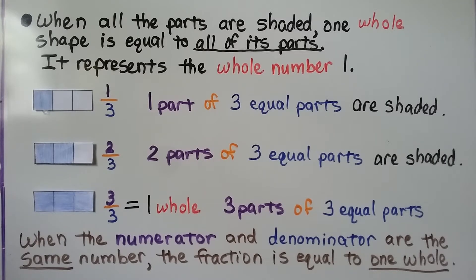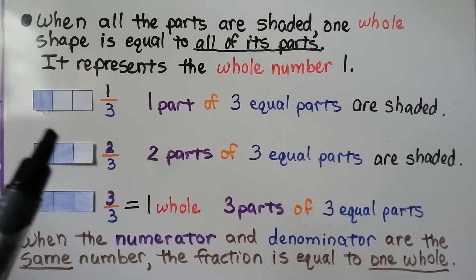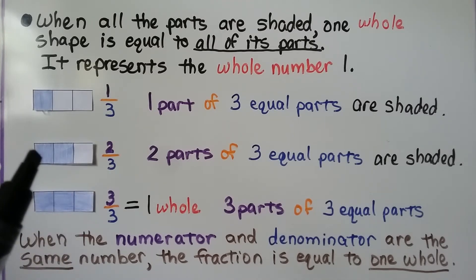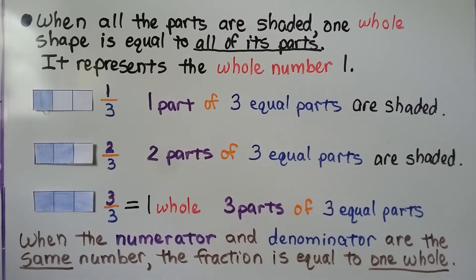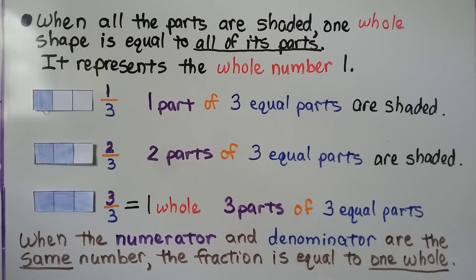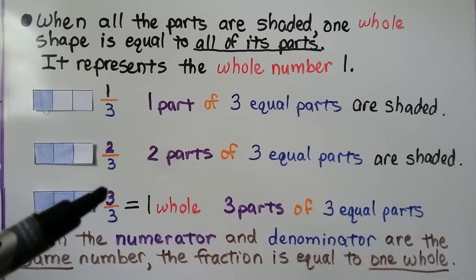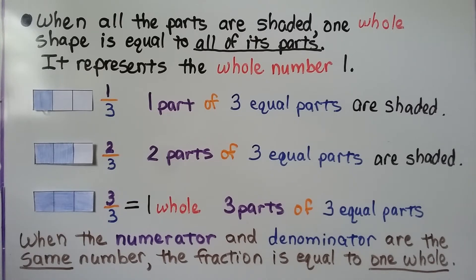When all the parts are shaded, one whole shape is equal to all of its parts — it represents the whole number one. Here we have three equal parts, and one of the three parts, one-third, is shaded. Here we have the same three equal parts, but two parts of the three equal parts are shaded — two-thirds are shaded. Here, all three parts of the three equal parts are shaded, so the whole thing is shaded. When the numerator and denominator are the same number — like three over three — the fraction is equal to one whole.